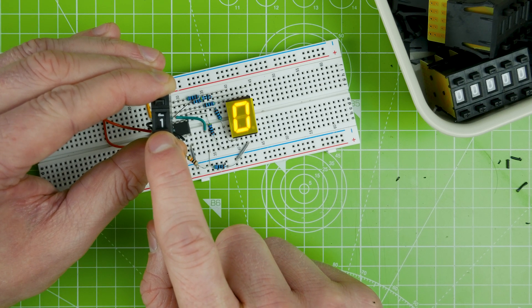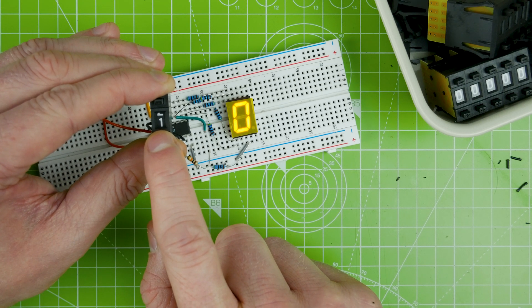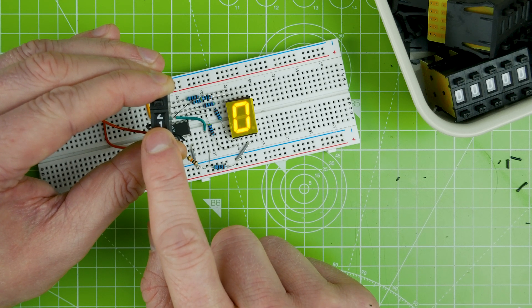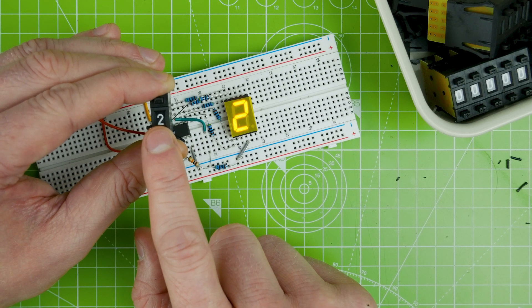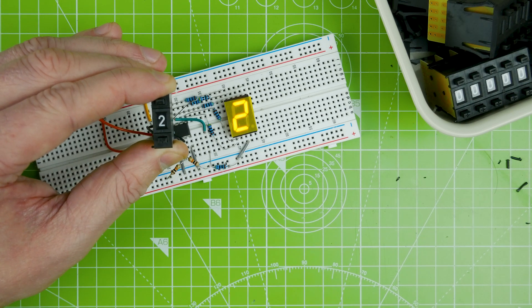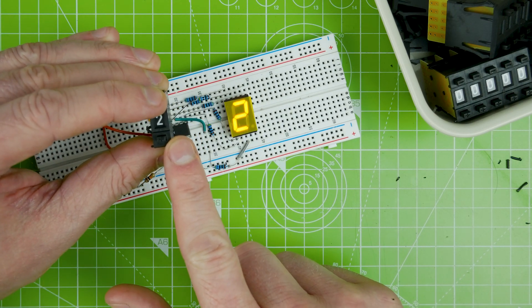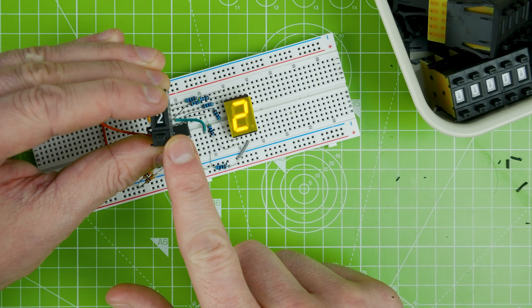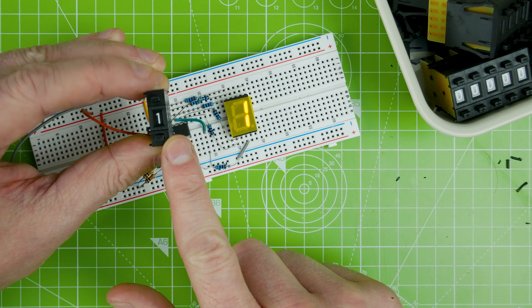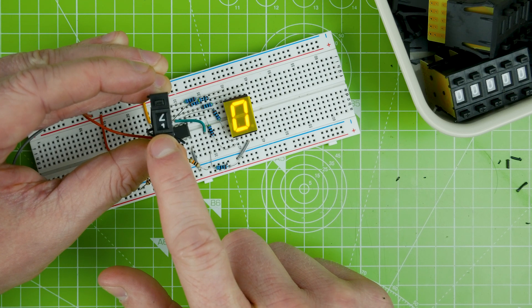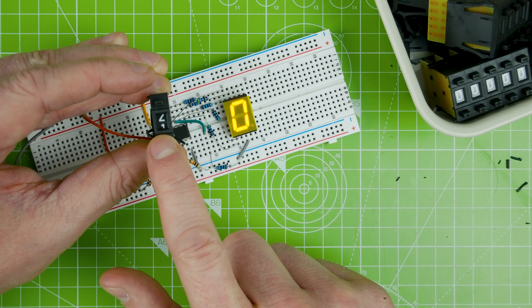Now I don't know whether this is make before break. Ah, look at that. So it is make before break or break before make. Basically it can be touching two lots of those wipers at once. So between two and one it should not be zero, but it's obviously touching more wipers so that two and one are on at the same time.